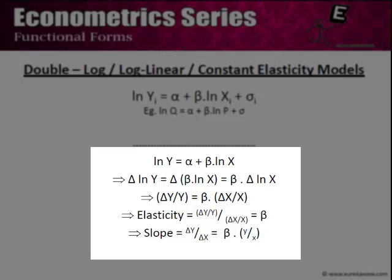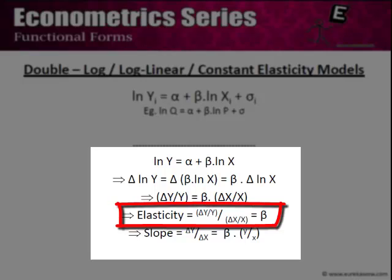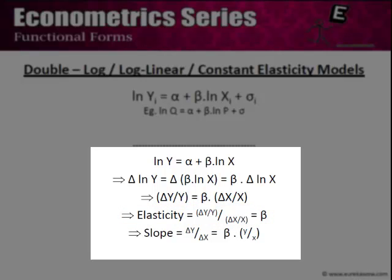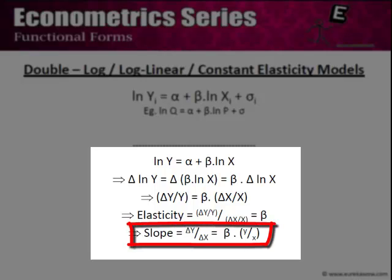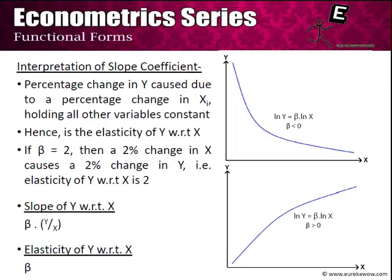By taking the rate of change on both sides, we observe that the elasticity — defined as (∂y/y)/(∂x/x), that is the percentage change in y relative to the percentage change in x — is constant and equal to β. This is why the model is also called a constant elasticity model. The slope is β·(y/x), which depends on the particular values of y and x at that point, so it is not constant along the functional form.